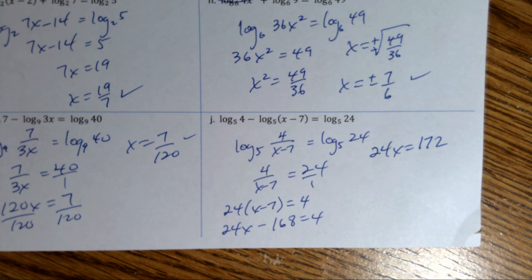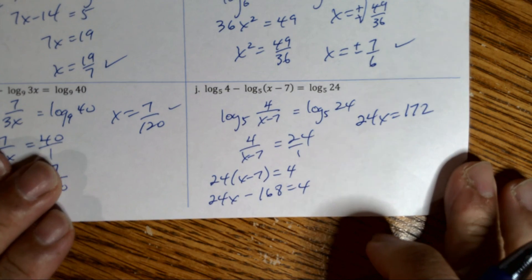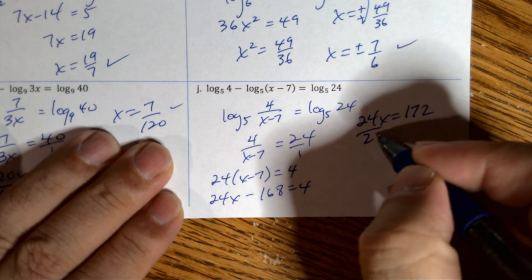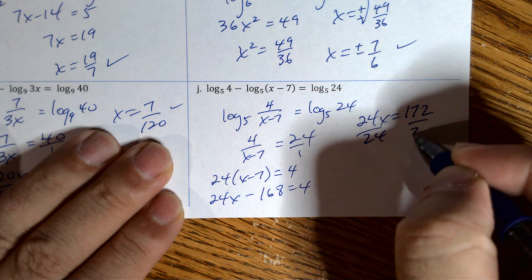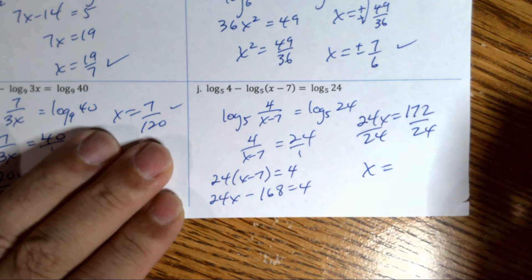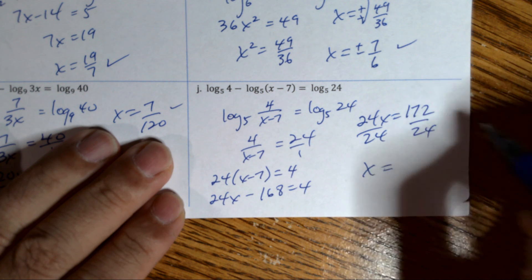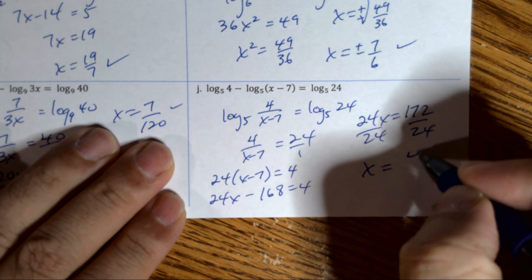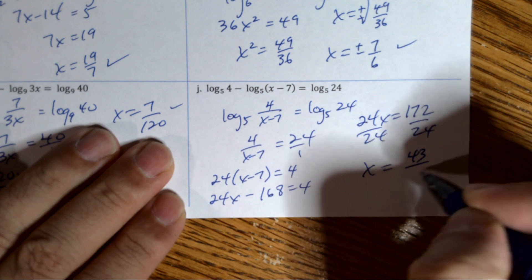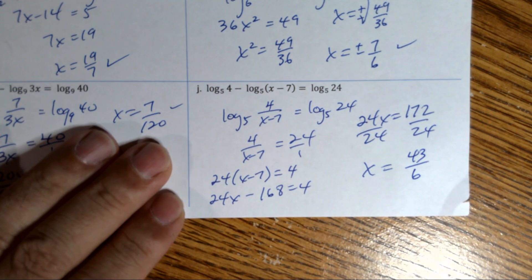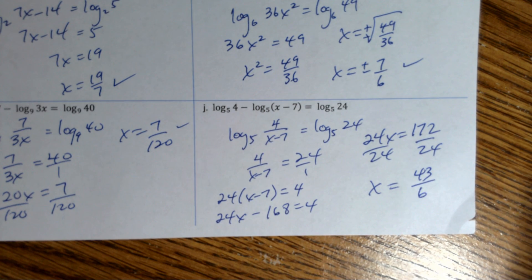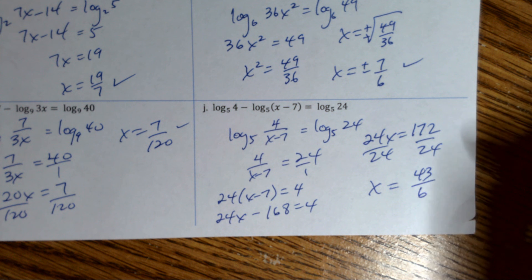Dividing by 24 — the numerator and denominator can both be divided by 4 — gives x = 43/6. That's the answer for example J. We'll do the next page in a different video, as this one is getting too long.